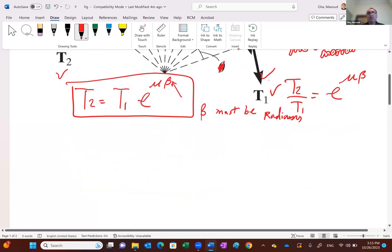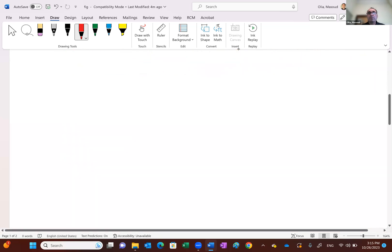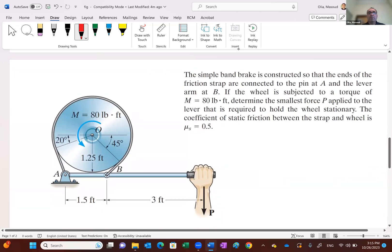So in the next page, I have a problem here for you that we can look at. Here we go. This is our problem. So it says the simple band brake is constructed so that the ends of the friction strap are connected to the pin at A and lever arm at B. So this cable is connected to A and B.